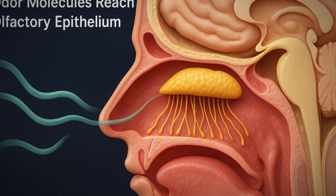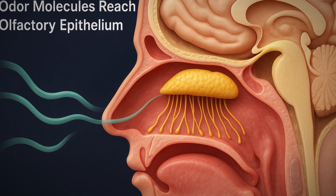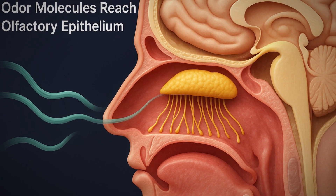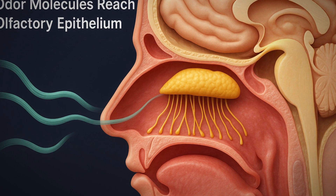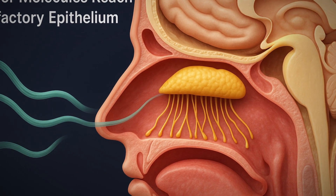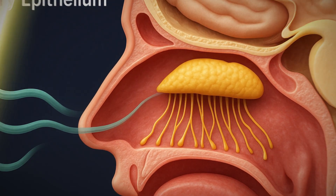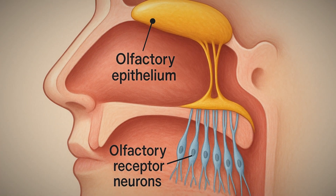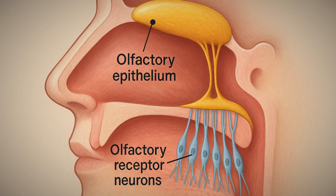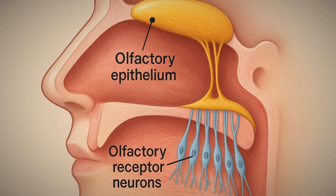Odor Molecules Reach the Olfactory Epithelium. High up inside the nasal cavity is a special patch of tissue called the olfactory epithelium. This area contains olfactory receptor neurons, which are sensitive to different smells.